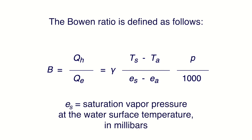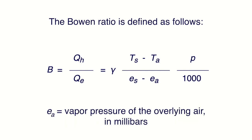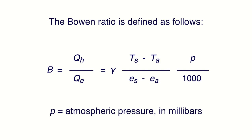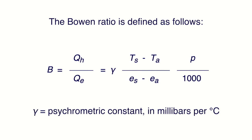E sub S is the saturation vapor pressure at the water surface temperature in millibars. E sub A is the vapor pressure of the overlying air in millibars. P is the atmospheric pressure in millibars. Gamma is the psychrometric constant in millibars per degree Celsius.